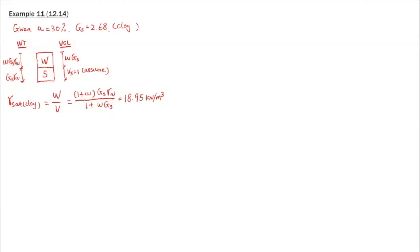So gamma saturated for clay is total weight over total volume, which works out to 18.95 kilonewtons per meter cubed. That's the saturated unit weight of clay. This shows the use of the phase diagram — as long as you know the basic definitions, you can calculate the saturated unit weight quickly. Once you get this, then the overburden pressure at 10 meter depth is 3 meters of dry sand plus 7 meters of saturated clay.